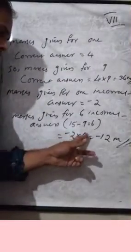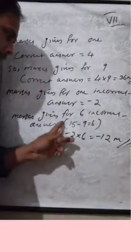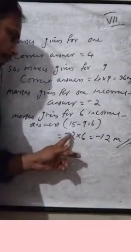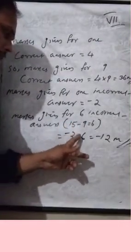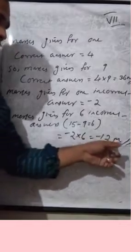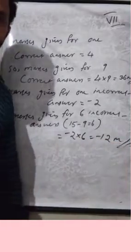You need to subtract. 6 questions are incorrect, so minus 2 into 6 equals minus 12.